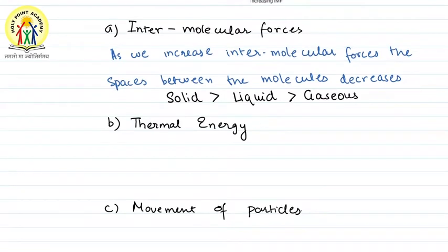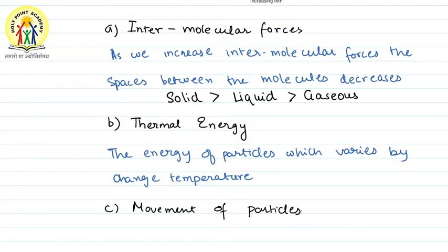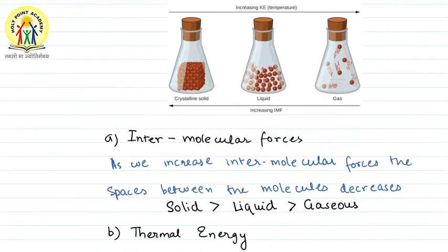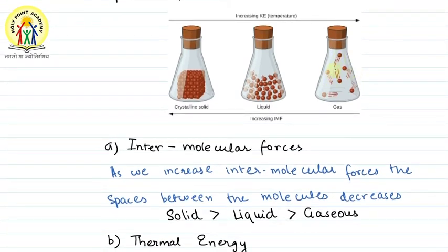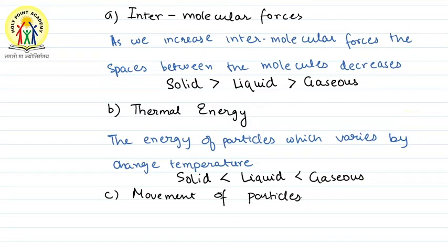The next property is thermal energy. Thermal energy is basically the energy of particles, which varies with change in temperature. In the gaseous state, molecules are far apart, meaning their movement is very high — so thermal energy is maximum in gases. It is minimum in solids, intermediate in liquids, and maximum in the gaseous state.